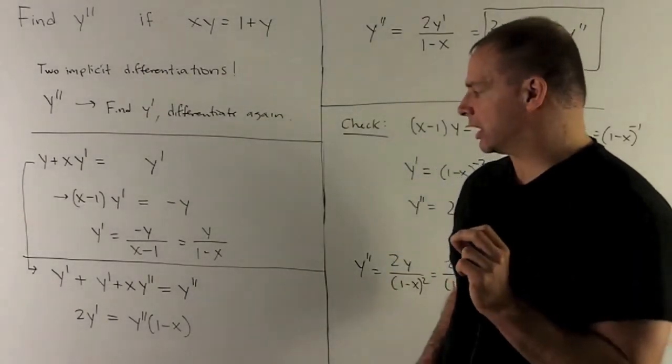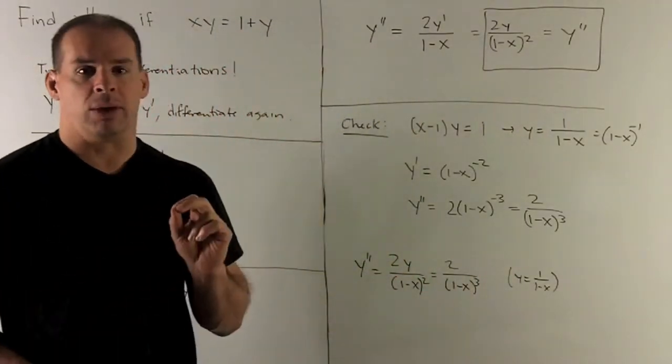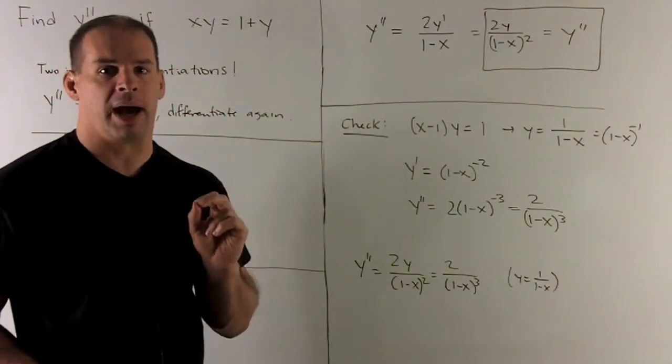What's that give us? That's going to give us y double prime equals 2y prime over 1 minus x.